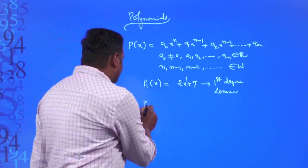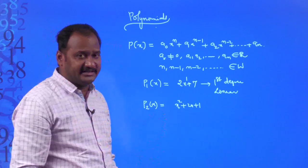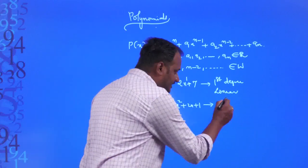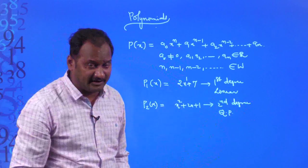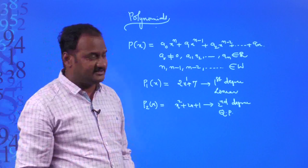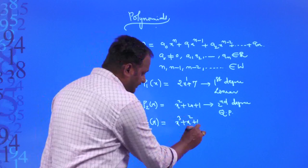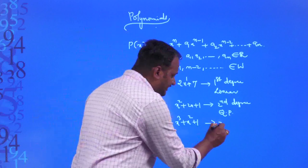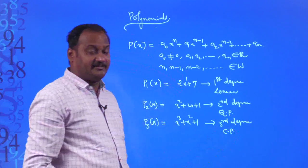A second degree polynomial, for example P₂(x) = x² + 2x + 1, has degree 2 and is called a quadratic polynomial. A third degree polynomial like x³ + x² + 1 has degree 3 and is called a cubic polynomial. And a fourth degree polynomial like x⁴ + 7 is called a biquadratic polynomial.